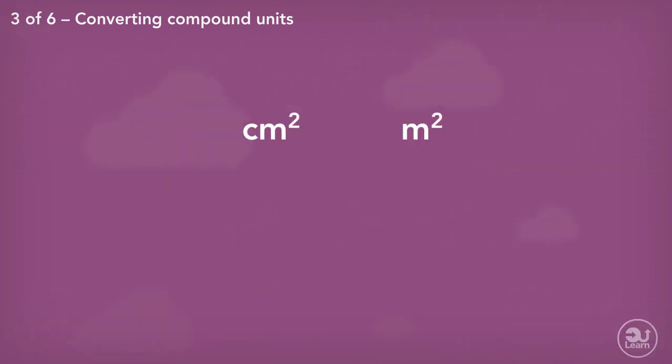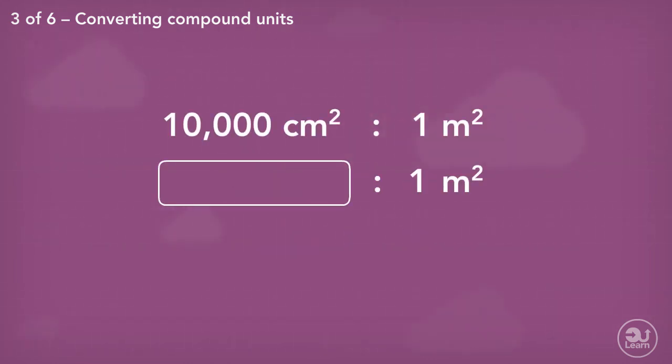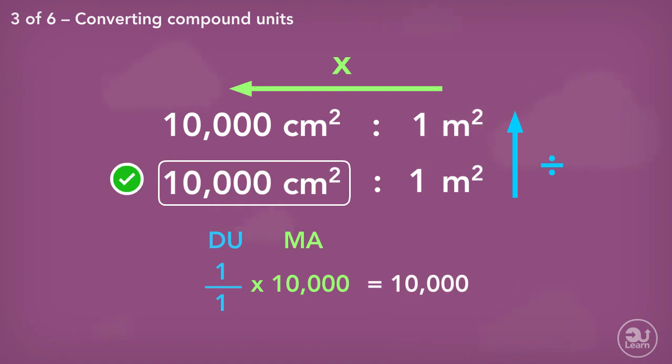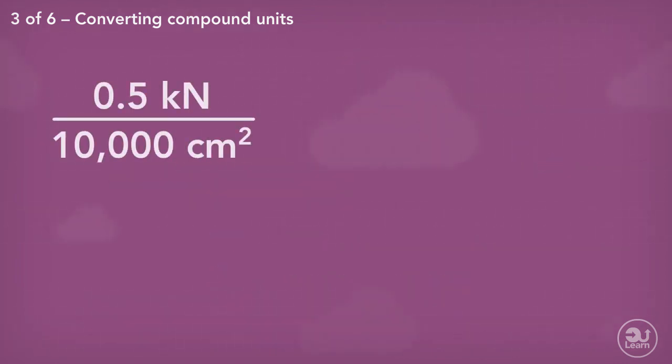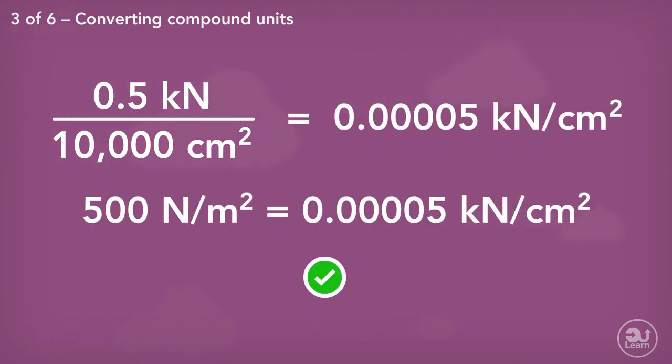The relationship between centimeters squared and meters squared is 100 squared to 1 squared, or 10,000 to 1. Using our trusted method once again, we divide up, multiply across. 1 divided by 1, multiplied by 10,000, gives us 10,000 centimeters squared. The final step, like before, is to divide 0.5 by 10,000 to give us 0.00005 kilonewtons per centimeter squared.